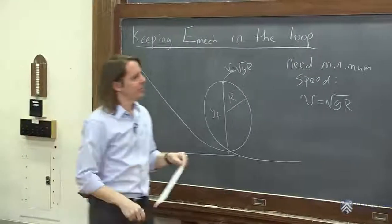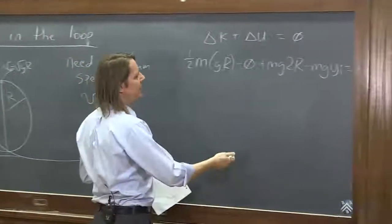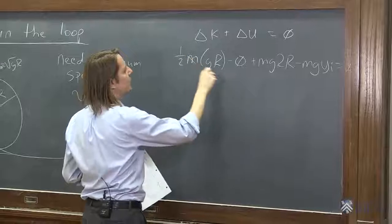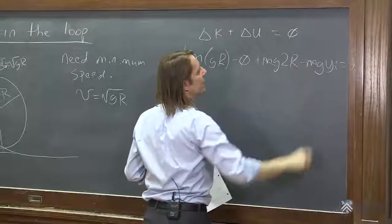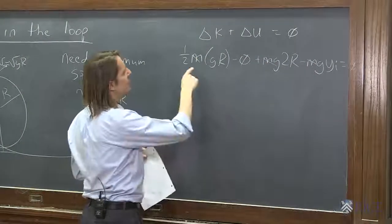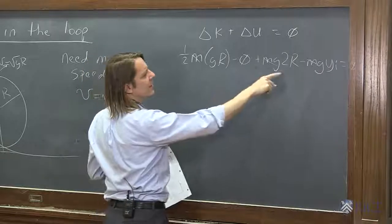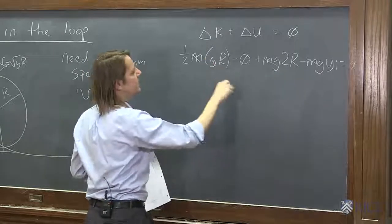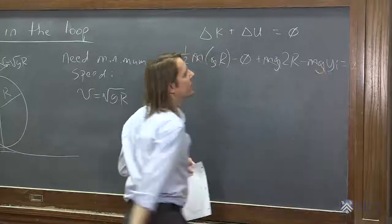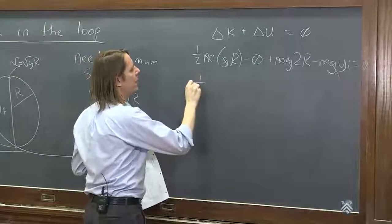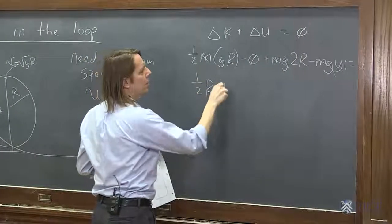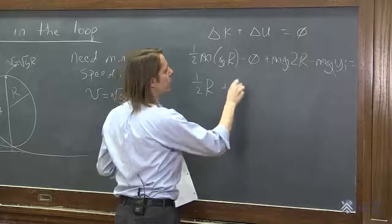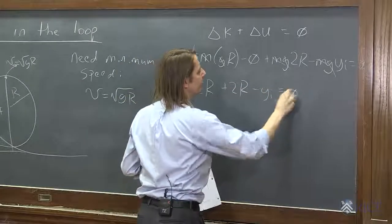All right. Then we just do a little bit of algebra, and we see if we can solve for this height here. Let's see. Mass is in every term. Mass goes away. Very nice. And let's see. So we've got, I need to solve for y i. G is in every term. I knew something else was going to go away. G cancels. So we have 1 half r plus 2 r minus y initial equals 0.